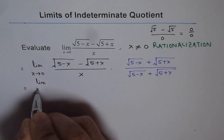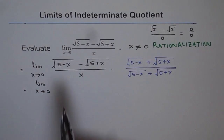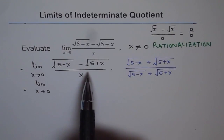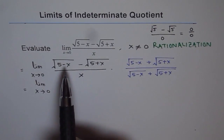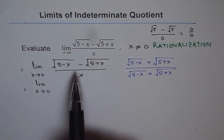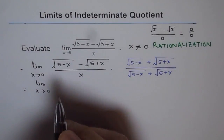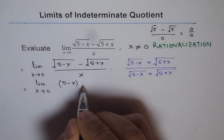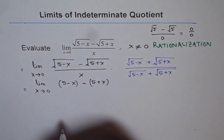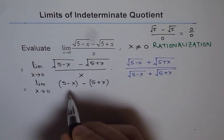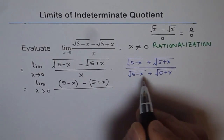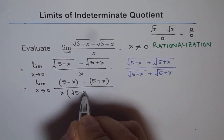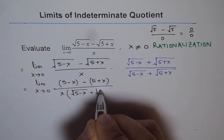This technique of rationalization helps us simplify. In the numerator we have a minus b times a plus b, where a is square root of 5 minus x and b is square root of 5 plus x. So a minus b times a plus b equals a squared minus b squared. Squaring the first gives 5 minus x, and squaring the second gives 5 plus x. In the denominator, we keep the term as such — we do not expand it.